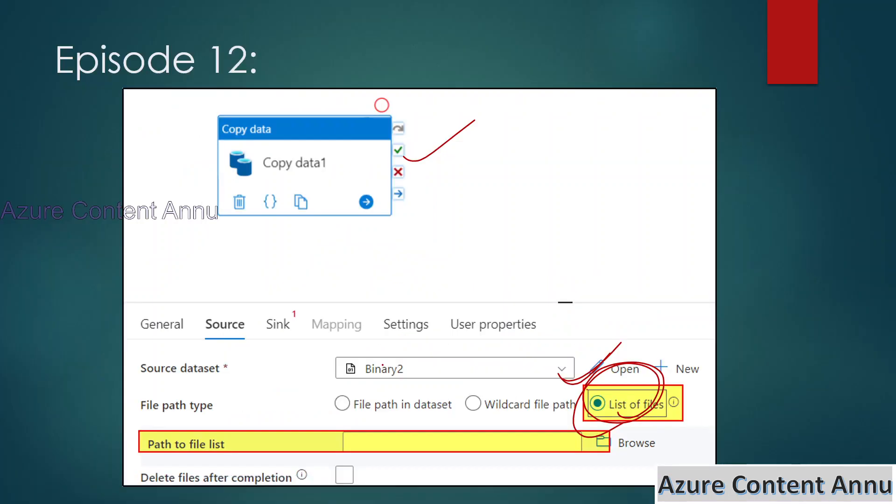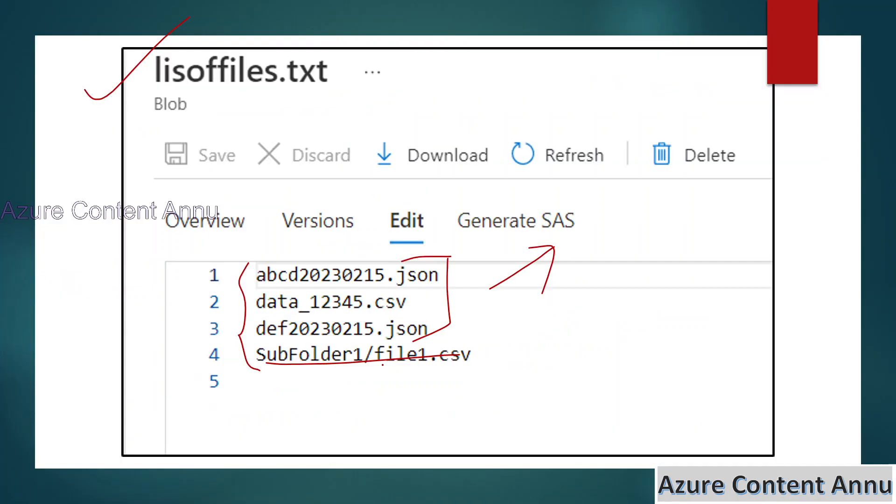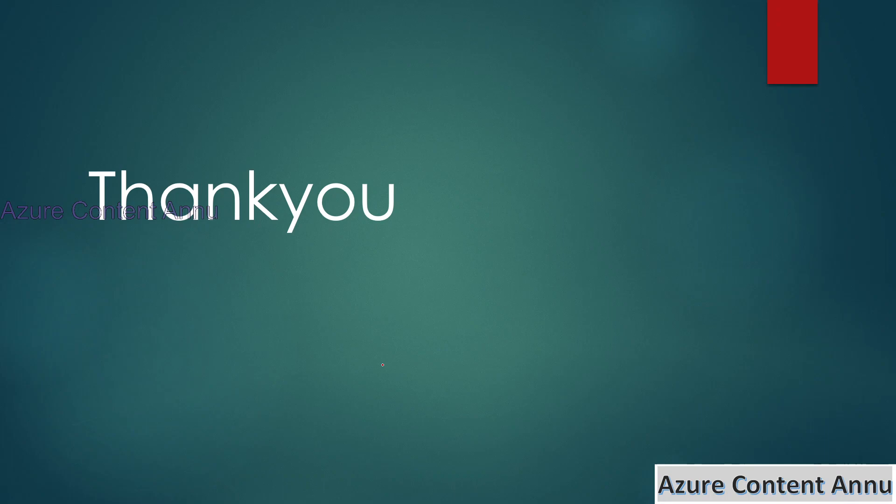I hope you got the idea of how to use the List of Files option in copy activity when you need to load specific files from one location to another. That's it for this video, guys. I hope you like the content — please hit the like button and subscribe to my channel if you haven't done so yet. Thank you.